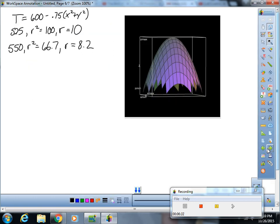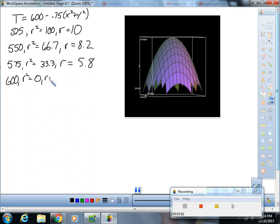You could totally do it if you just wrote it out. If I put in 575 for my temperature, I get R squared is 33.3 and R therefore is 5.8. And then if I put 600 in for my temperature, I get R squared equals 0 and I get R equals 0.